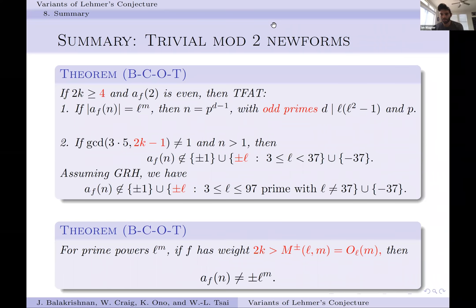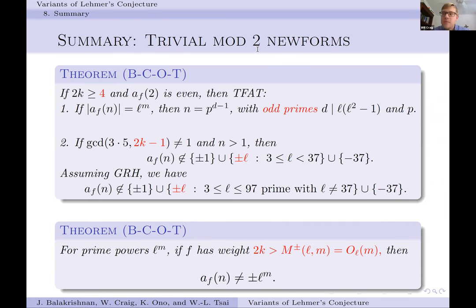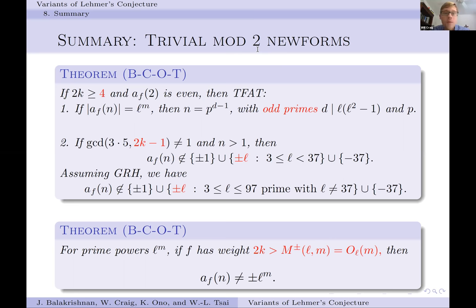A question arises about tau at a prime equaling another prime. Because of the trivial mod-2 Galois representation property, tau at a prime is going to be an even number. Since we're only considering whether tau(N) equals some odd number alpha, we don't have to worry about the value of tau at a prime — we only need to worry about values of tau at even powers of primes. If you want to know whether tau(N) equals an even number alpha, that's a harder problem.